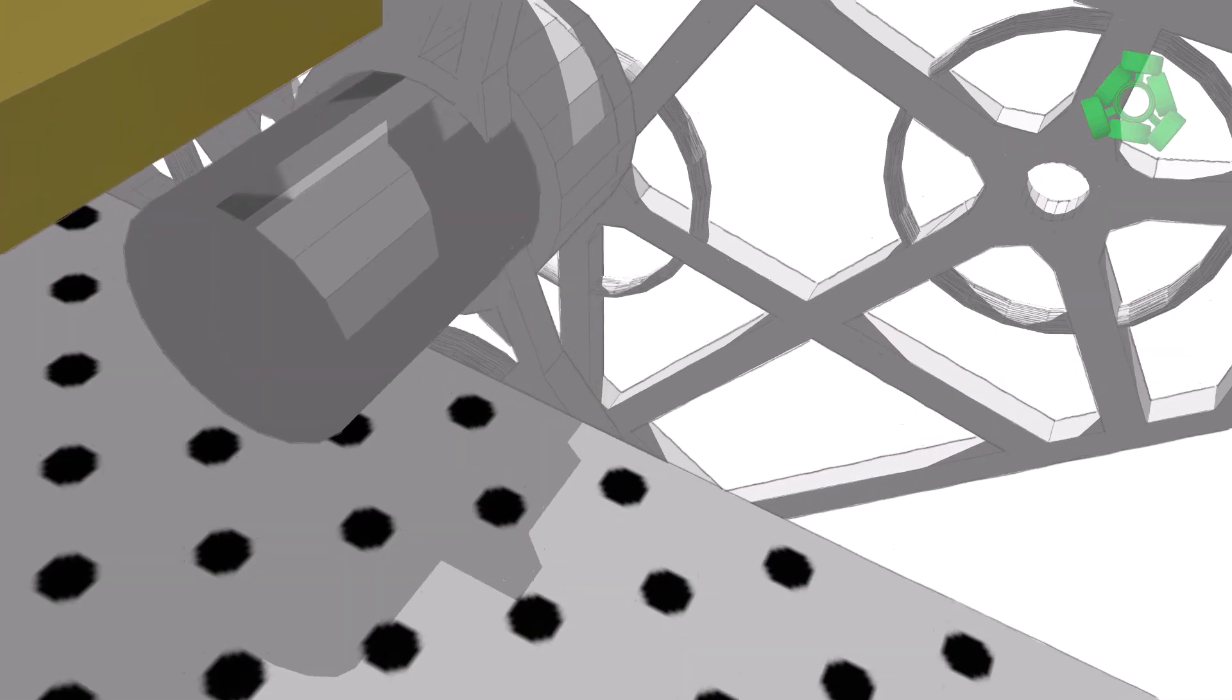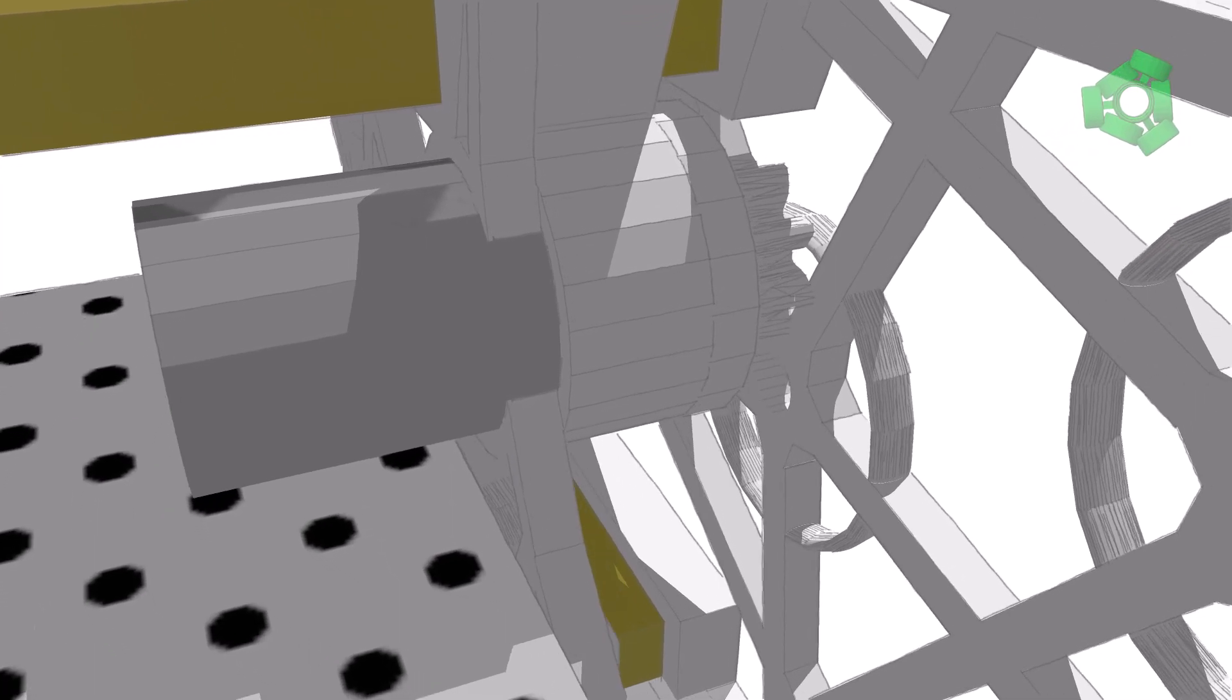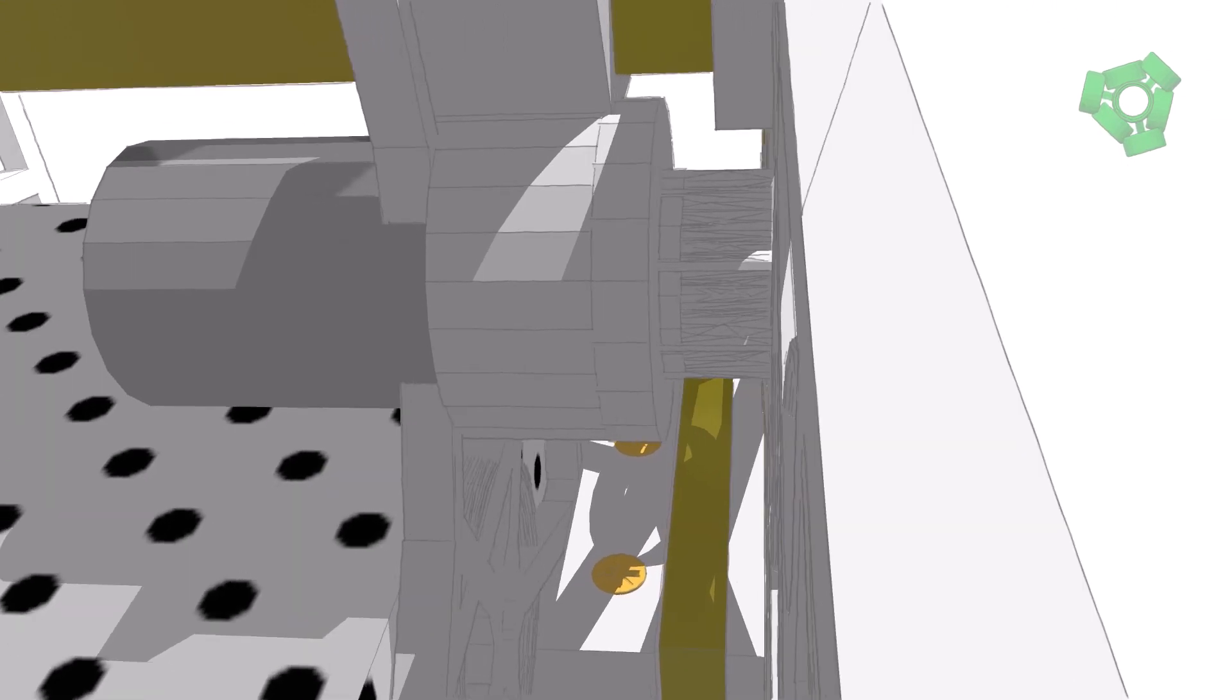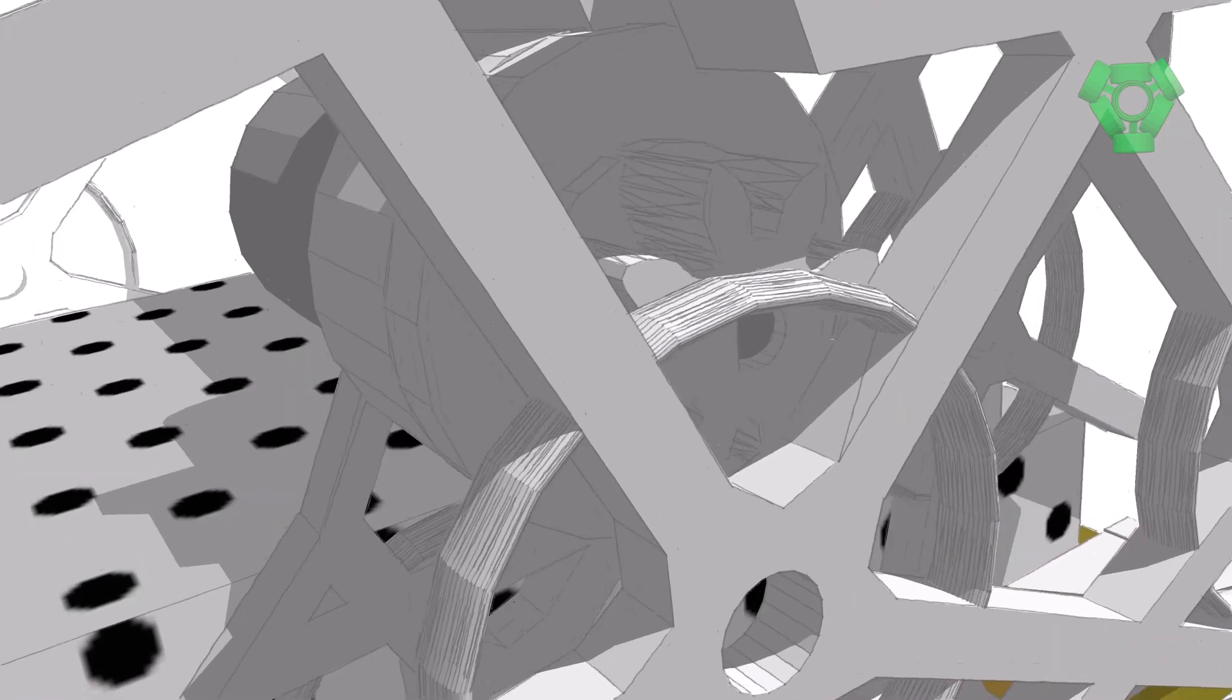Place the pinion gear between the left and central frame sections. Slide it onto the shaft of the motor, pressing the two together so that the motor slides into the central frame. They should all fit snugly.